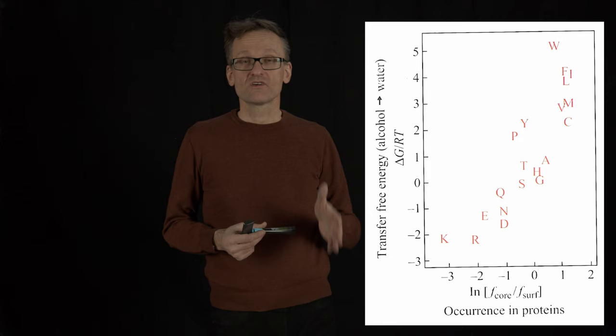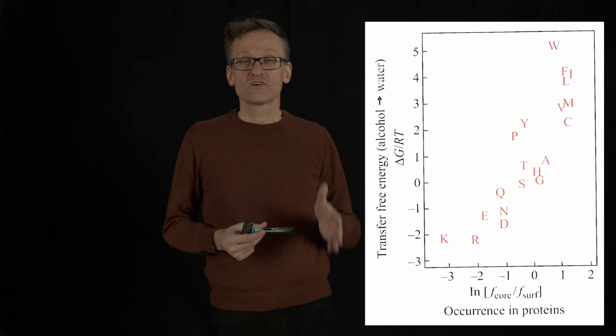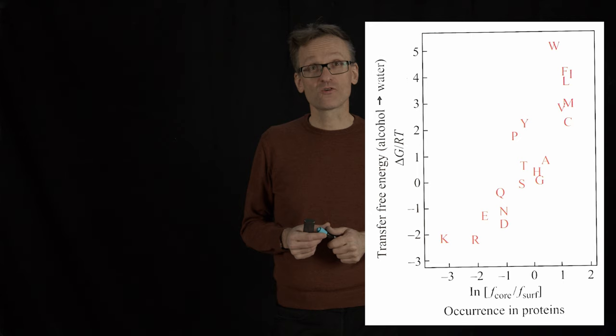So the y-axis, which is a correct Boltzmann distribution, appears somewhat correlated with this other stability thing that I claim was not a Boltzmann distribution. And there is, of course, a reason for that.